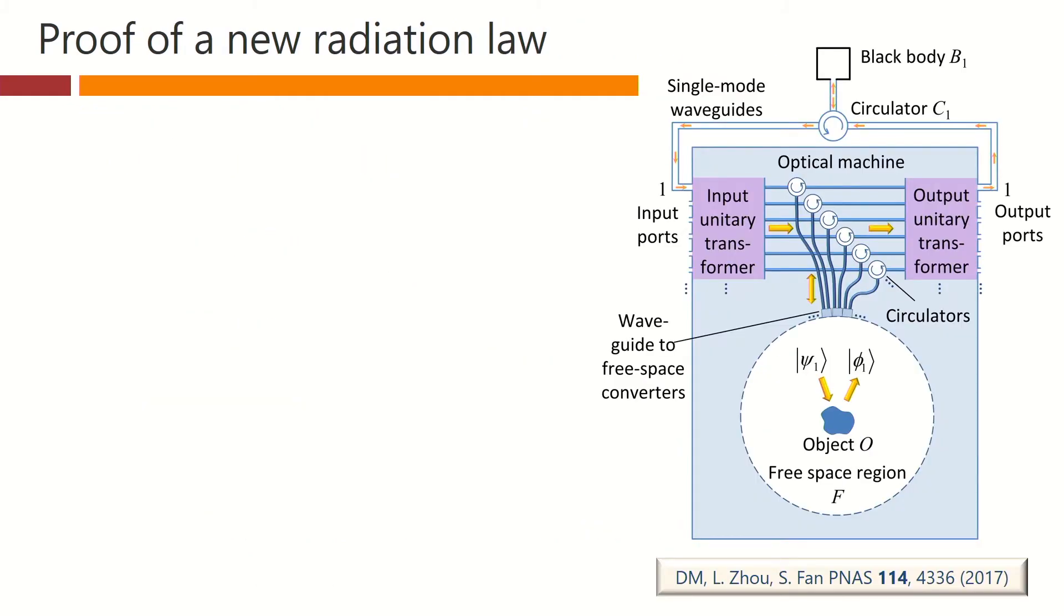So let's try to sort this out. And to do this, we're going to do a thought experiment. And a thought experiment involves this machine here. Now, what do we have in this machine? First of all, we have a black body up here, and we're coupling it through a single-mode waveguide, in and out.